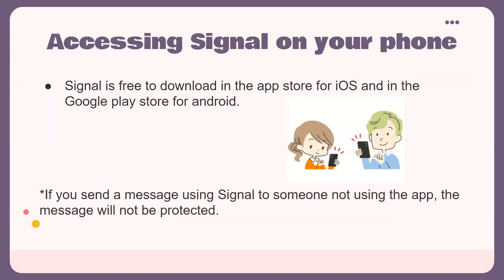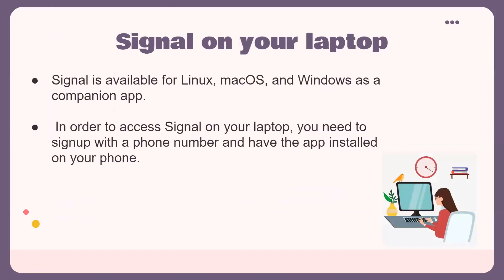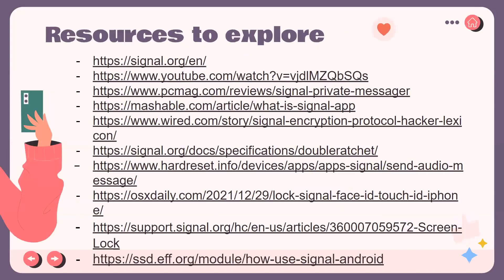Signal is free to download in the App Store for iOS and the Google Play Store for Android. If you send a message using Signal to someone not using the app, the message will not be protected. Signal is also available for Linux, macOS, and Windows as a companion desktop app. In order to access Signal on your laptop, you need to sign up with a phone number and have the app installed on your phone.